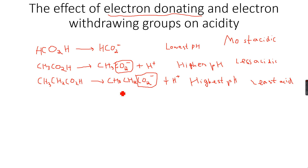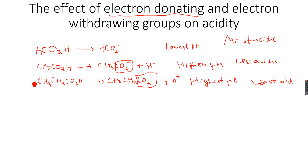The greater the alkyl group, the greater the electron donating effect. The greater the electron donating effect, the lower the stability of the carboxylate ion, because the greater the negative charge density on the carboxylate ion. Because of this less stability and greater negative charge density, it is more likely to accept H+ ions, which is what an acid does not do — an acid donates H+ ions. So that's why it will be least acidic.